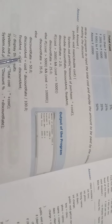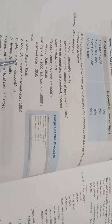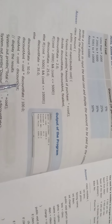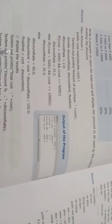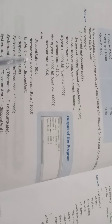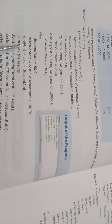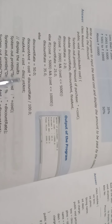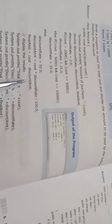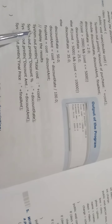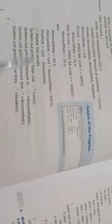Discount amount kaise calculate karenge: cost into discount rate divided by 100. Jo cost lenge, into discount rate by 100. Phir final amount kaise nikalenge: cost minus discount amount. Yeh jo aayega usko yahan pe likh denge aur result aap yahan pe dekh sakte hain — display the result.